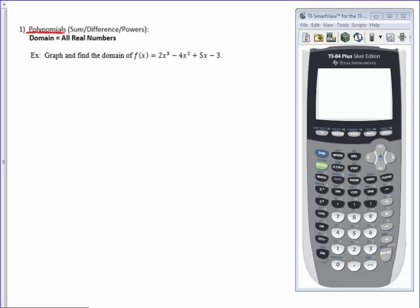So we see this example: f of x equals 2x cubed minus 4x squared plus 5x minus 3 would be what we consider a polynomial, since the terms are either added or subtracted and they contain powers of x.